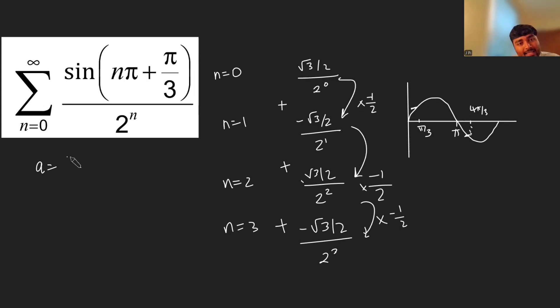Our first term a is root 3 over 2 divided by 2 to the 0, which is just root 3 over 2. And our ratio is negative a half. So this infinite sum here, we can just apply the infinite series formula for S infinity, which is a over 1 minus r. And this is going to be root 3 over 2 divided by 1 minus negative a half, which is root 3 over 2 divided by 3 over 2, which is root 3 over 3. And that there would be our final answer.